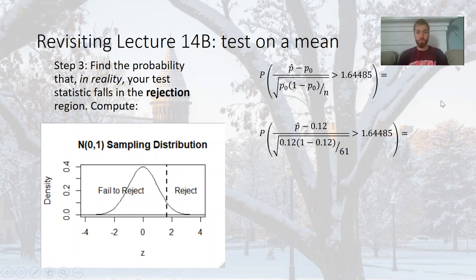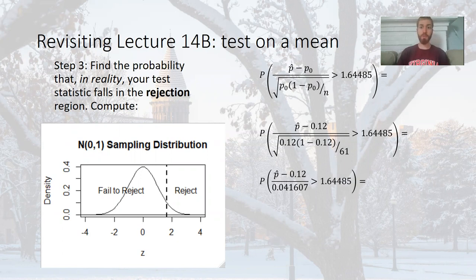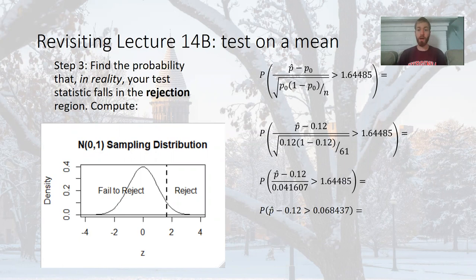Let's plug in the values for p-null and n. The square root of 0.12 times 0.88 over 61 is 0.041607. So multiplying both sides by 0.041607, we need to solve for the probability that p-hat minus 0.12 is greater than 0.068437. Adding 0.12 to both sides, we get the probability that p-hat is greater than 0.188437. That will tell me the power here — the method is we want the probability that my test statistic is beyond the rejection region, so we needed to compute the rejection region based on the null hypothesis.